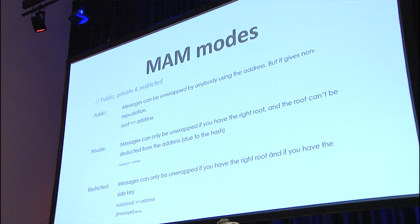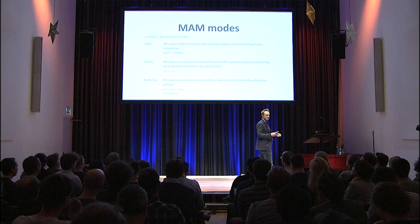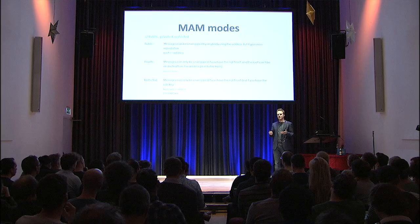And the restricted mode — which is also used in the Data Marketplace — uses an encryption layer on top of the message. All of the data gets encrypted symmetrically, and with this symmetric encryption, nobody can read the data in that message. So even if you can find it in the Tangle Explorer, you can't read the data because you need that key to decrypt it.